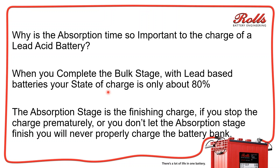So that means if you have an Outback FlexMax 60 or FlexMax 80 with 4,000 watts of solar, that array is going to do roughly on average around 60 to 65 amps of current. On two parallel strings of 460 amp hour batteries — about 900 amp hours total — the absorption time is going to be a while. It's going to take time for those batteries to absorb all that current. That's why we call it absorption.